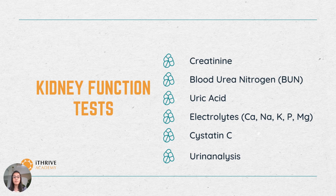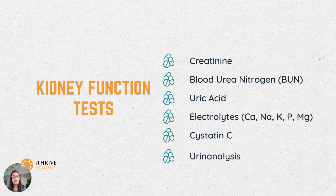Lastly, talking about the different kidney function tests — there are different blood markers which help in identifying if your kidneys are functioning properly. The first is creatinine, which is the breakdown product of creatine phosphate made in your muscle fibers, and its blood levels are indicative of kidney function. Blood urea nitrogen is the waste product of protein metabolism, and its levels can also tell you about kidney function. Uric acid is a waste product excreted by the kidneys.